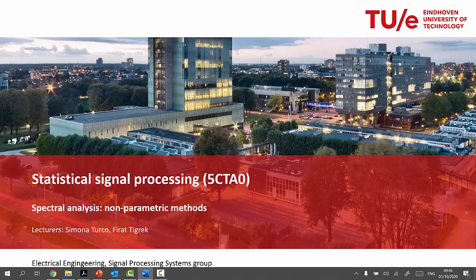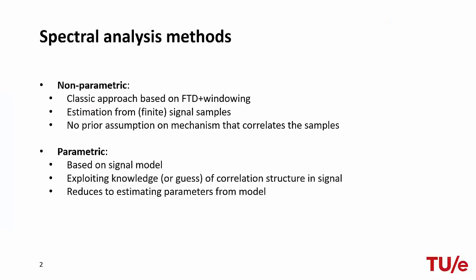In this screencast, we discuss non-parametric methods for spectral estimation. Non-parametric methods do not assume a particular functional form of the power spectral density, but allow the form of the estimator to be determined entirely by the data. They are based on the discrete Fourier transform of either a windowed signal or an estimation of its autocorrelation function.